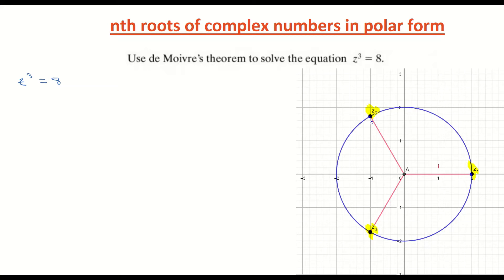If this was z to the power of 4, you would have 4 roots; z to the power of 2 gives 2 roots. You'll also notice that the angle between each of these complex numbers is the same size, so this circle is broken into 3 equal segments. That gives you background on what you're trying to achieve — finding those 3 complex numbers.